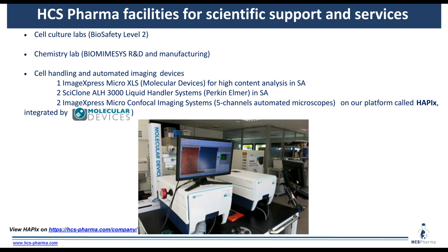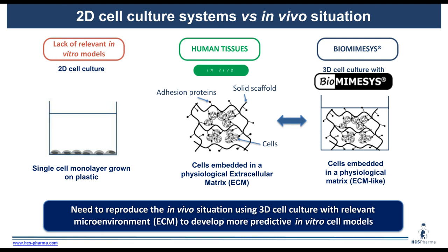Nowadays, many models are still done in 2D cell cultures with monolayers grown on plastic. We know that human tissues in vivo are in 3D, with cells embedded in a physiological extracellular matrix with adhesion proteins and solid scaffold behavior. With Biomimesis, we can embed cells in a physiological ECM-like matrix including a solid scaffold component and adhesion proteins. There is a need in pharmaceutical industries and academic laboratories to reproduce the in vivo situation using 3D cell culture systems with more relevant microenvironments and ECM to develop more predictive in vitro cellular models.